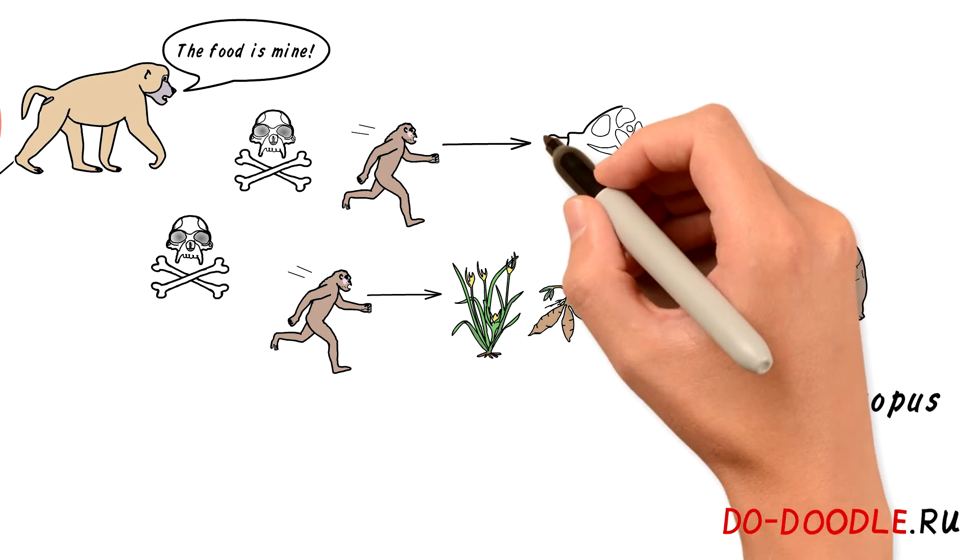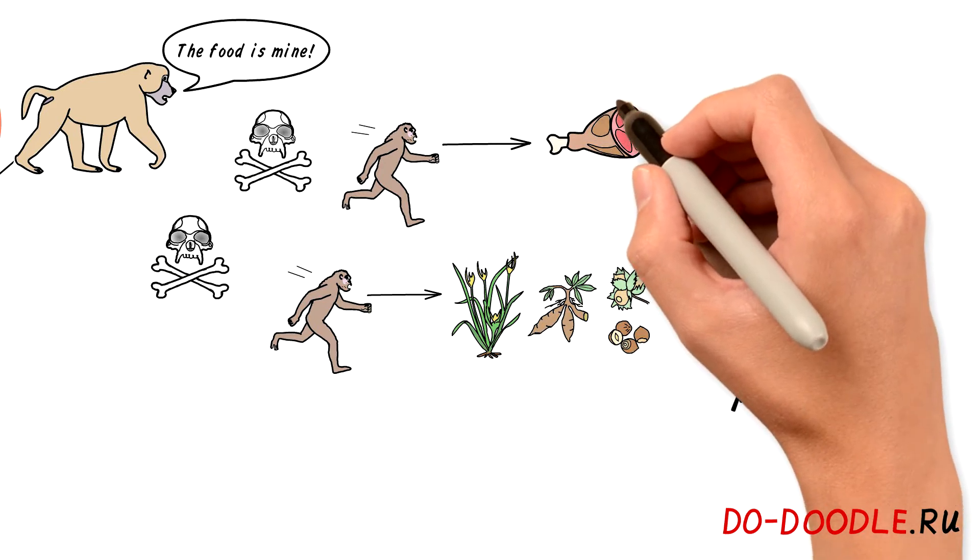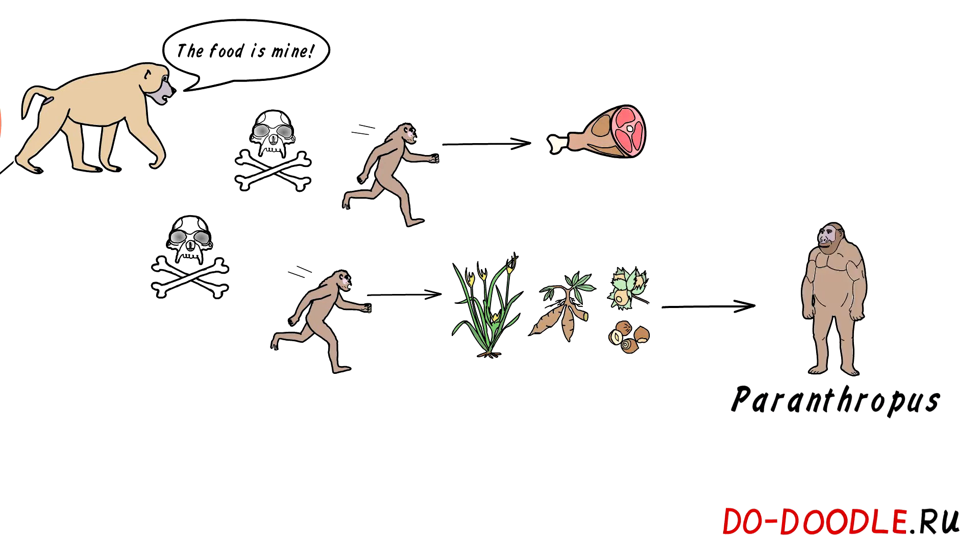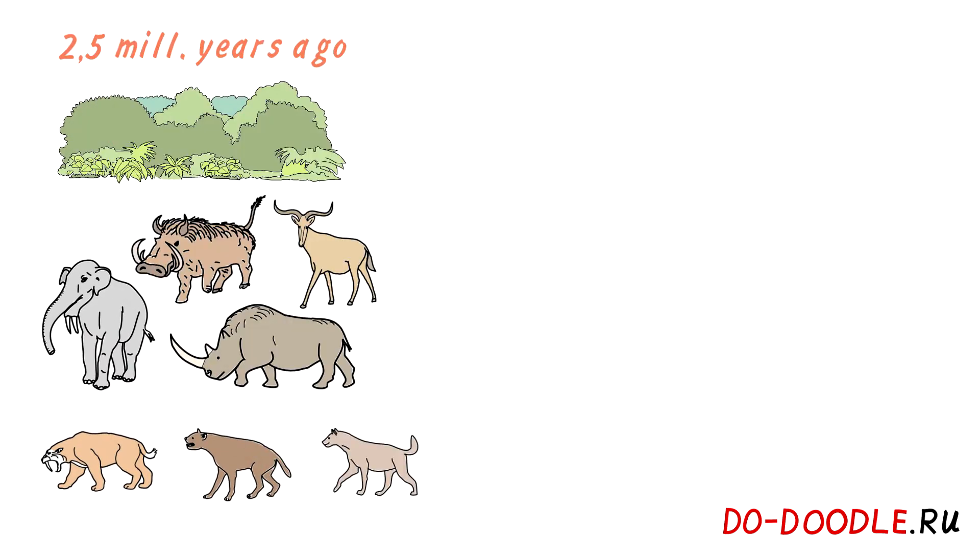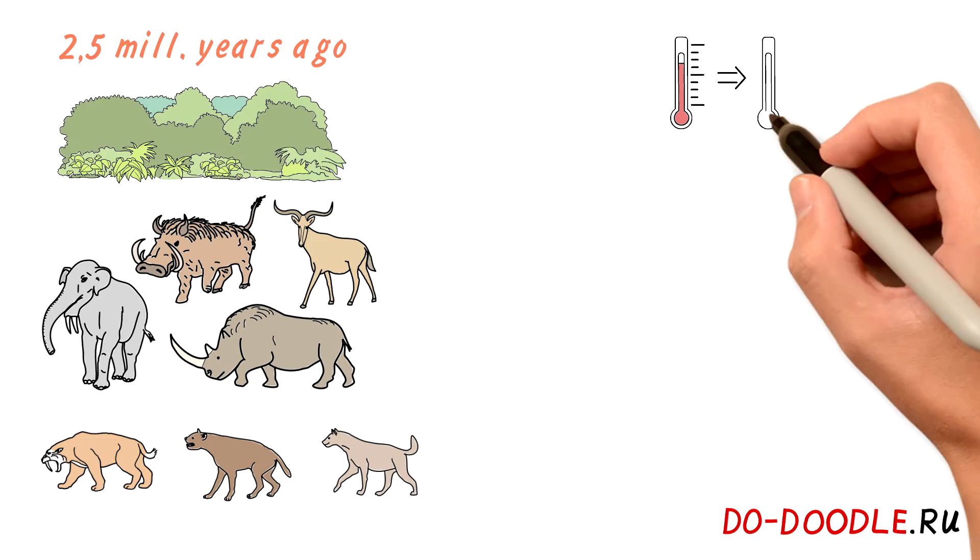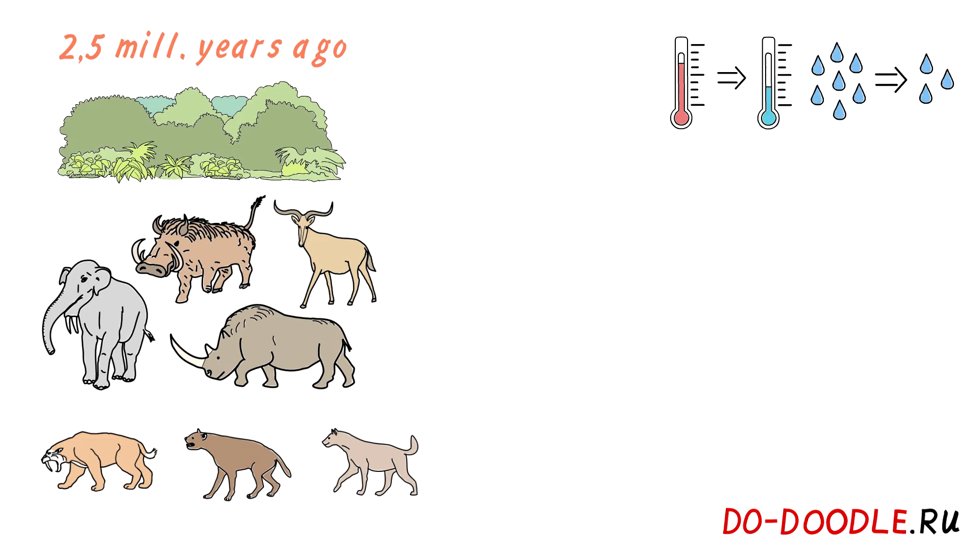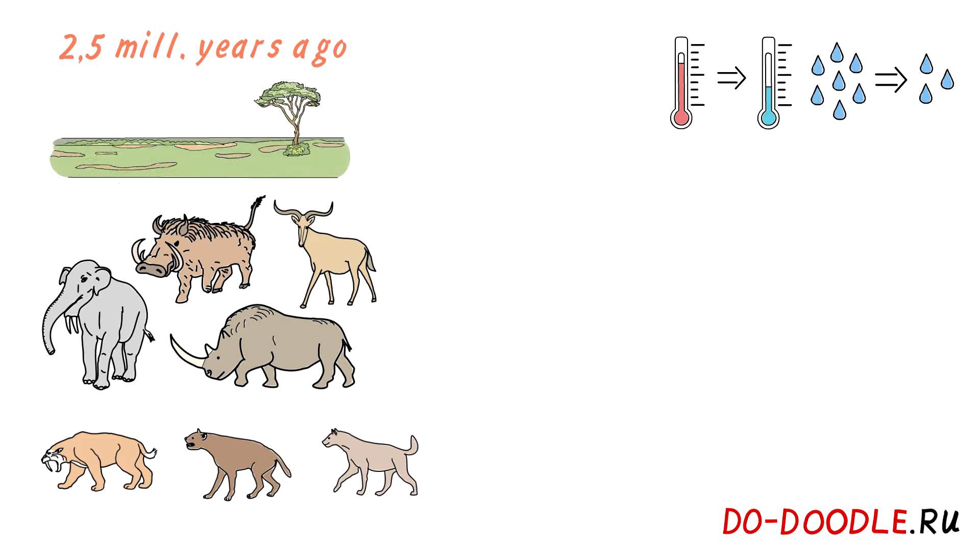Another way was to consume flesh. Luckily enough, there was an environmental opportunity to start doing so. Two and a half million years ago, the climate started to change. It became colder and drier. The thick bush was replaced by grassland savannah.